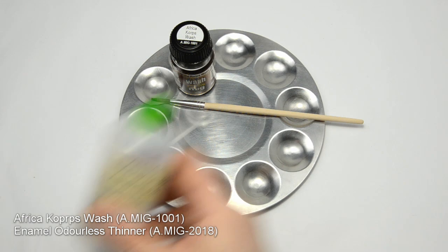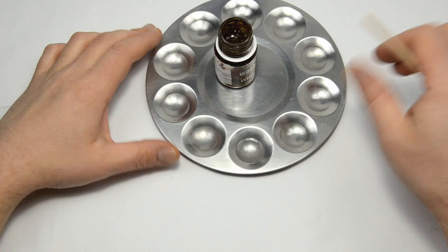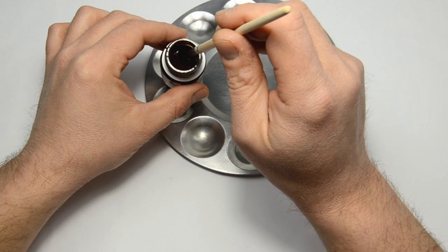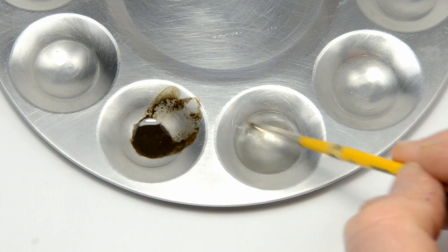I opted for the Africa Corps wash and ammo odorless thinner. Be sure to mix the bottle well if you want good results. Open it, stir it with a toothpick, add a mixing ball and shake the hell out of it. You can use the wash straight from the bottle, but it's a little thick for my taste. So, I thin it down slightly.